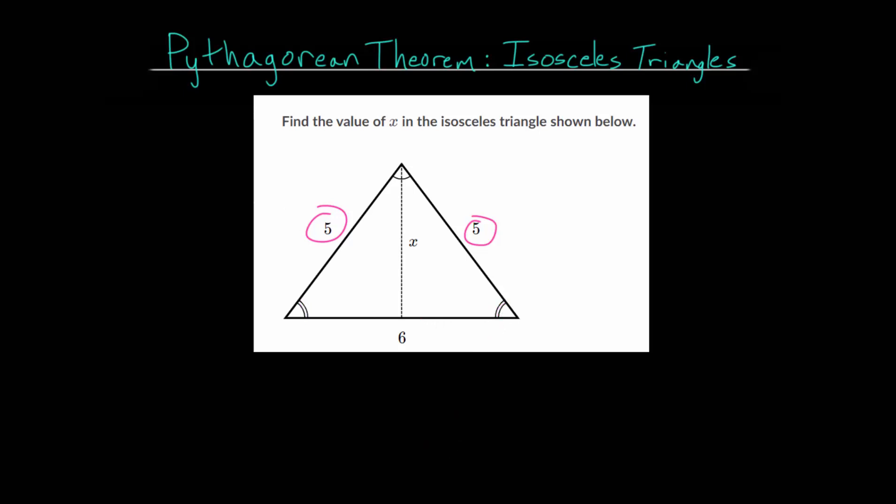And for these example problems, we want to use the Pythagorean Theorem, which occurs with right triangles. So if we had some random right triangle, the Pythagorean Theorem just tells us the relationship between the side lengths.